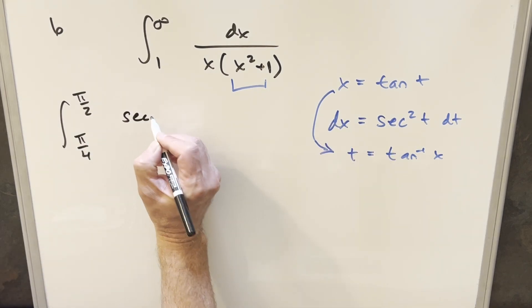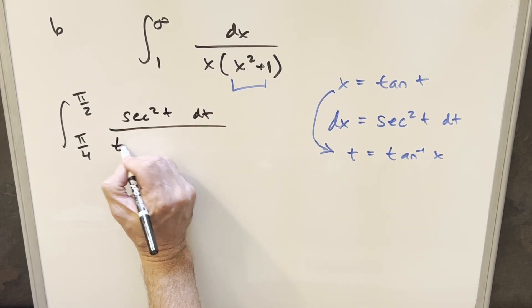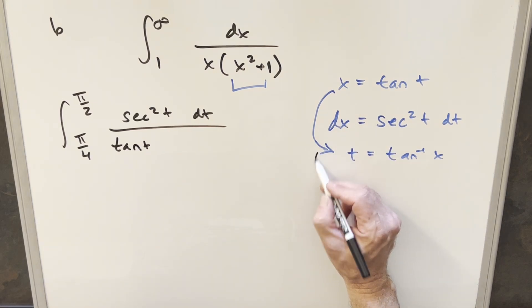Our dx value, secant squared t dt, our x is going to be tan t. Now, for this part right here, for x squared plus 1, let's get that value as well.